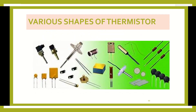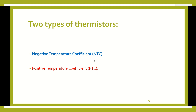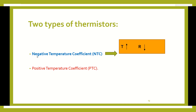Thermistors come in various shapes and are used in the medical field for different applications, including measuring systematic body temperature. There are two types of thermistors. The first is the Negative Temperature Coefficient (NTC): if the temperature increases and resistance decreases, it is called NTC. The second is the Positive Temperature Coefficient (PTC): if the temperature increases and resistance also increases, it is called PTC.